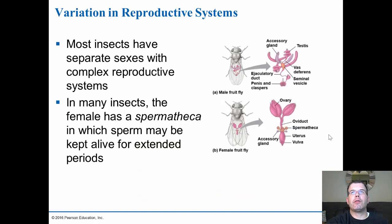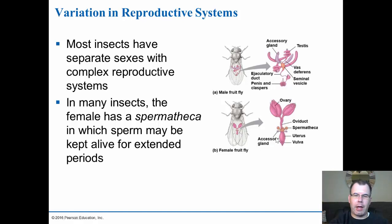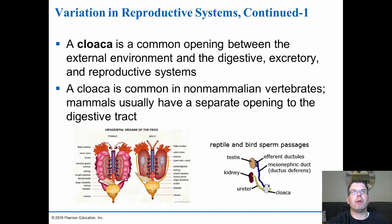Most insects have separate sexes with complex reproductive systems. Fruit flies have both testes and ovaries. They may store sperm for extended periods, using it repeatedly to fertilize eggs rather than relying on a single mating event. Another structure is the cloaca — typical of frogs, birds, and reptiles — a common opening for the digestive, excretory, and reproductive systems. Mammals usually have separate openings, but non-mammalian vertebrates share this common passage.